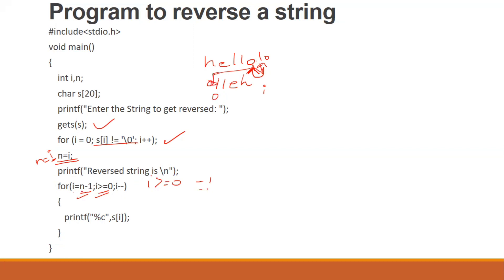For i equal to n minus 1, initialized, now here we go to 0. We are giving the condition: i value greater than or equal to 0. If there is a negative value we stop. We will print that particular character, then i decrement is given. So we go through indices like 0, 1, 2, 3, 4, 5 — starting from 5 minus 1 = 4, going down.